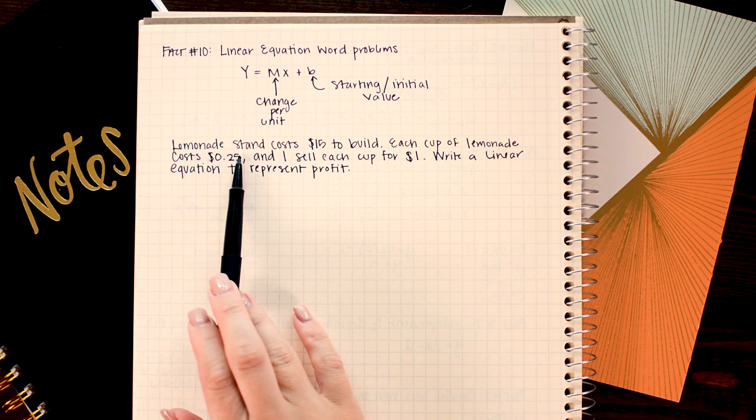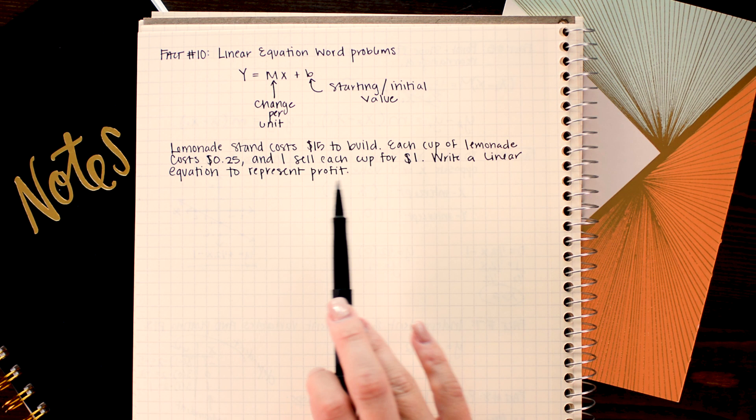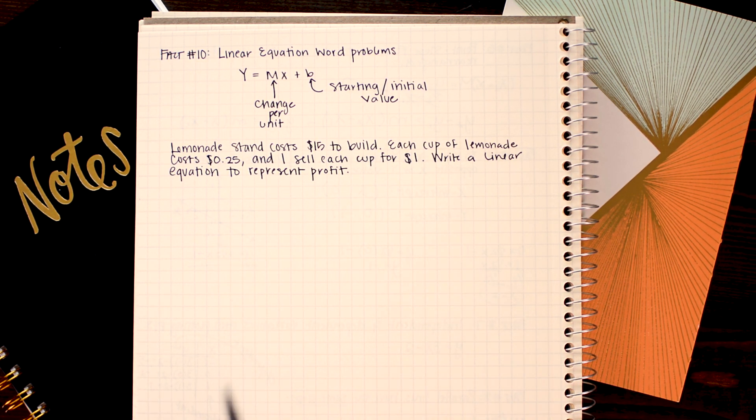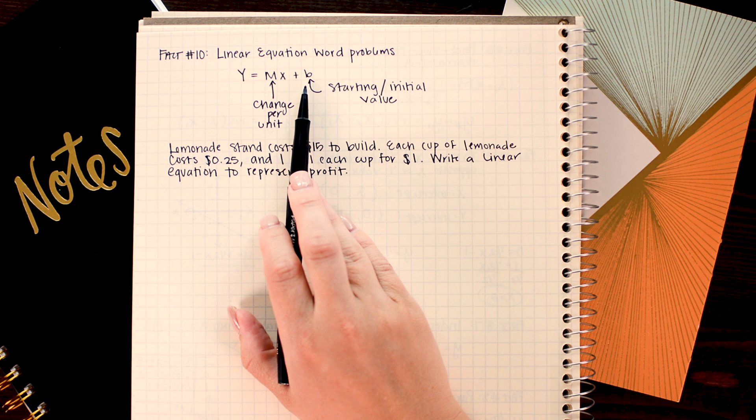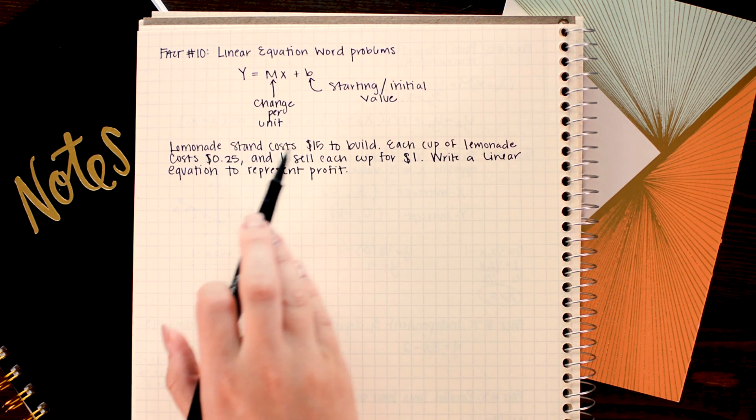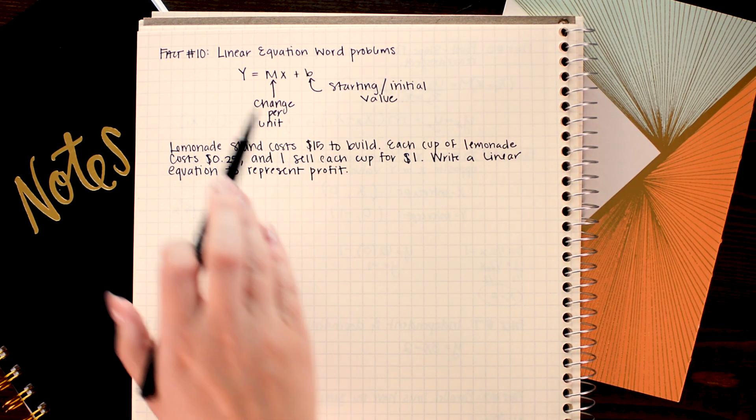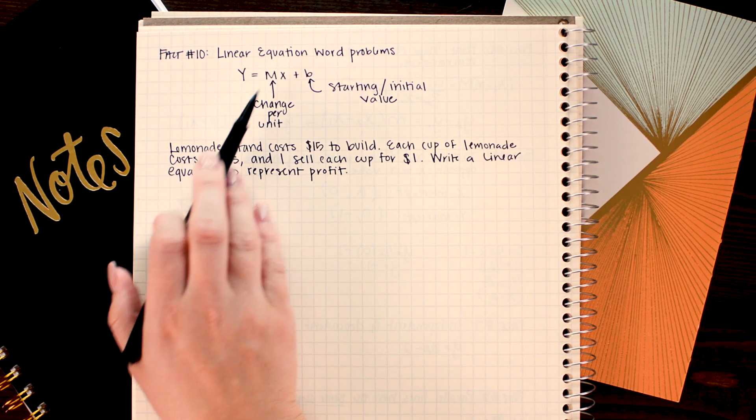Linear modeling problems pretty much always boil down to the same two pieces of information. You're looking for an initial or start value as well as a change per unit. Suppose I have a lemonade stand that costs fifteen dollars to build and each cup of lemonade cost me twenty five cents to make and I sell each cup for one dollar. Let's write a linear equation to represent the profit of this lemonade stand. So pretty much all linear equation word problems boil down to the same sort of two things. Your y-intercept is now the value that represents the starting or initial value. In this example that's the negative fifteen dollars it costs you to build and the slope represents the change per unit.